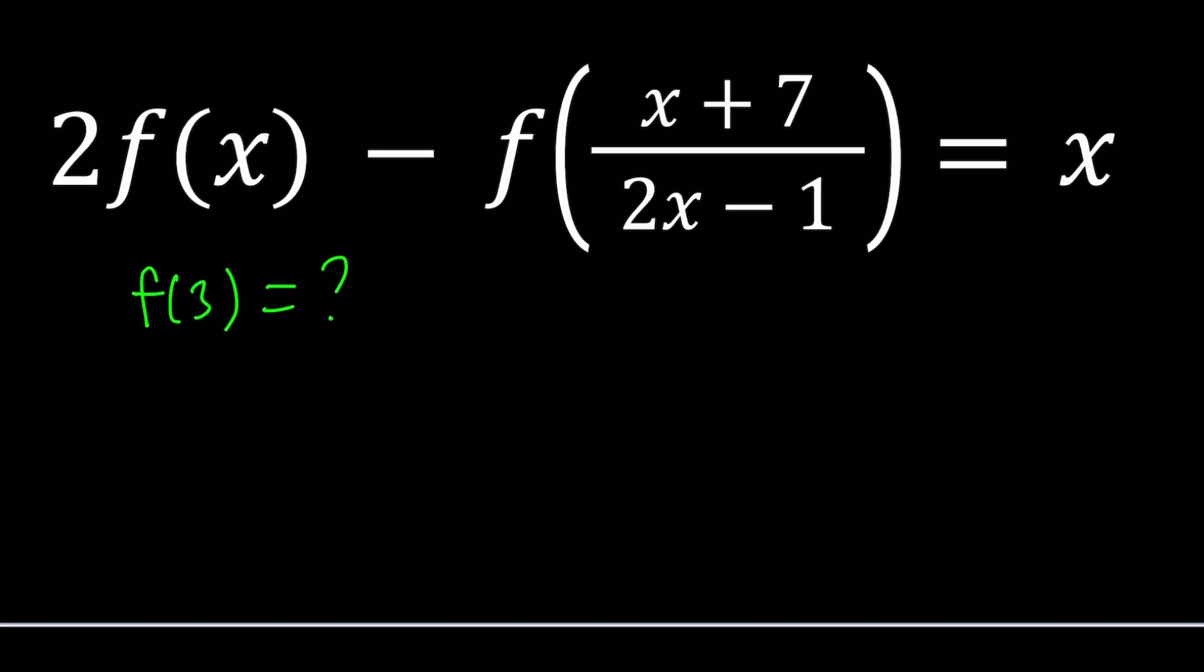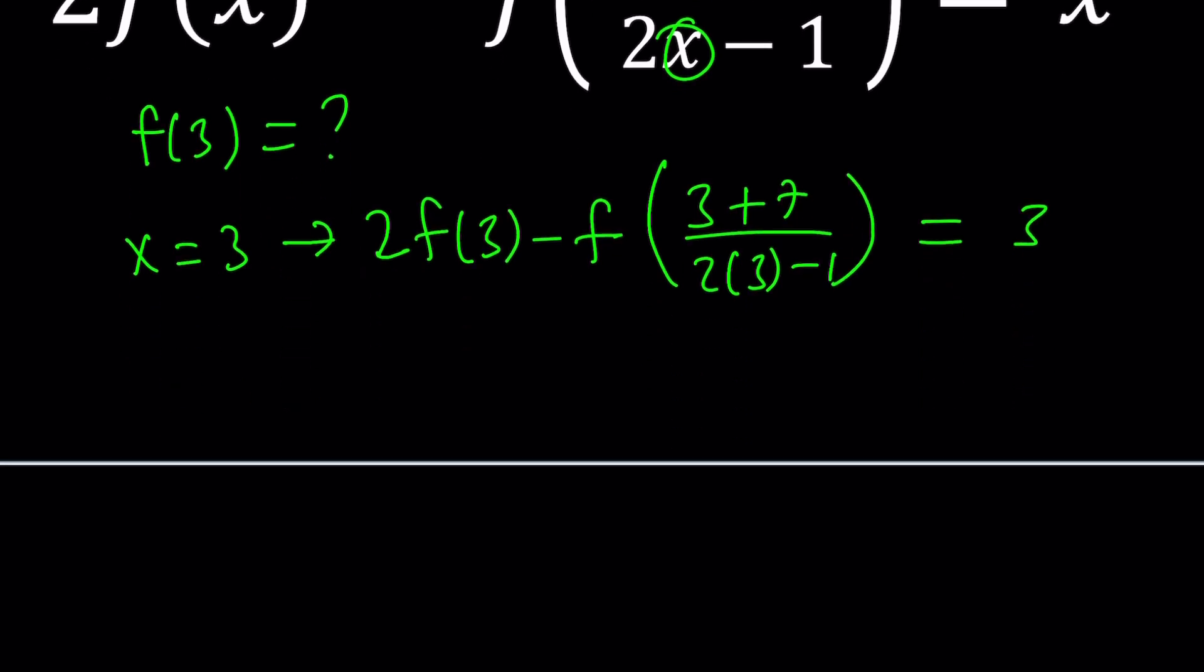That would probably be the best thing we can do. If you replace x with 3, though, there are consequences. We're going to be getting another point or value. It's going to look like this: 2 times f of 3 minus, if you replace x with 3 here and here, you're going to get 3 plus 7 divided by 2 times 3 minus 1. And on the right-hand side, you're going to have 3 because we have x. Because x is 3.